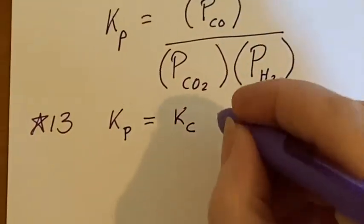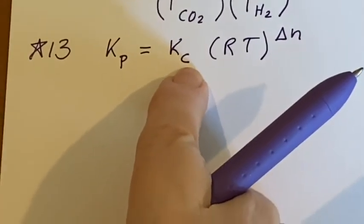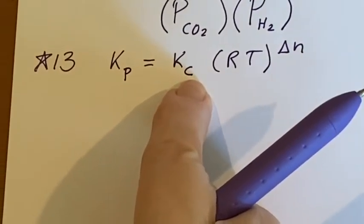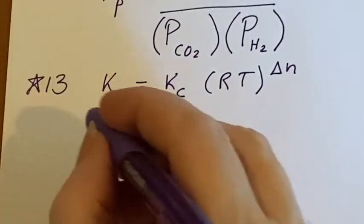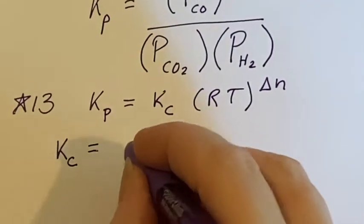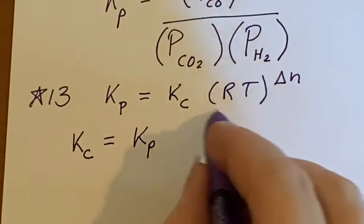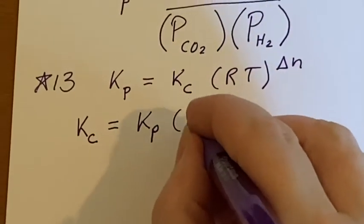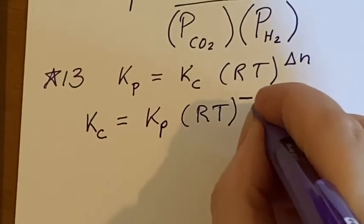And they want us to go the opposite direction. They've given us this and they want that. I can do some algebra on that and say that this is going to be the other way around and this would end up the RT instead of being a delta N would be a negative delta N.